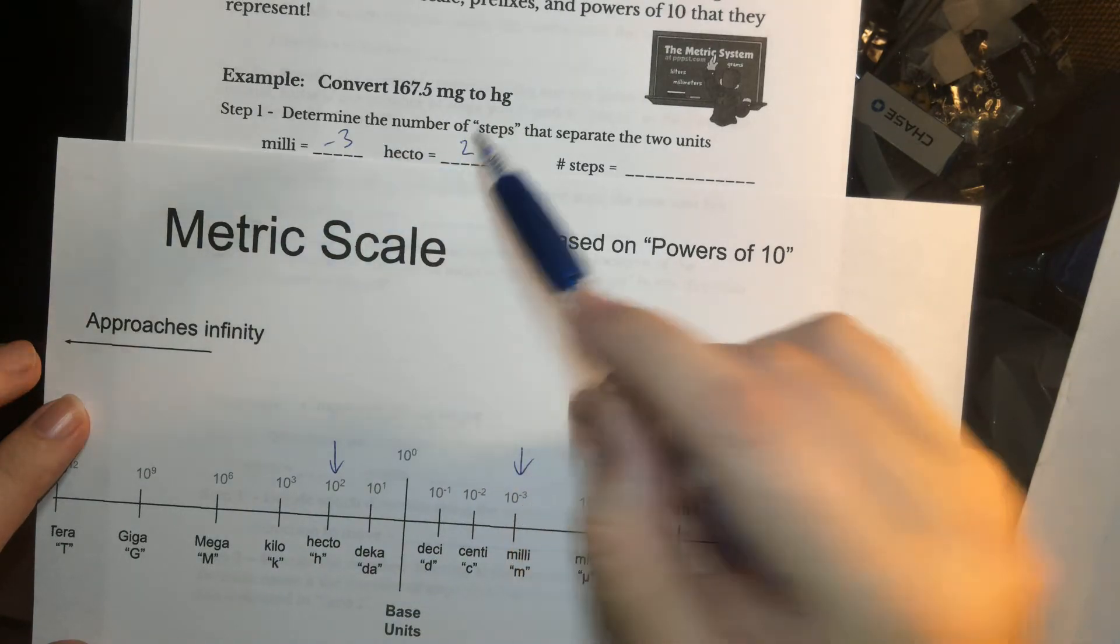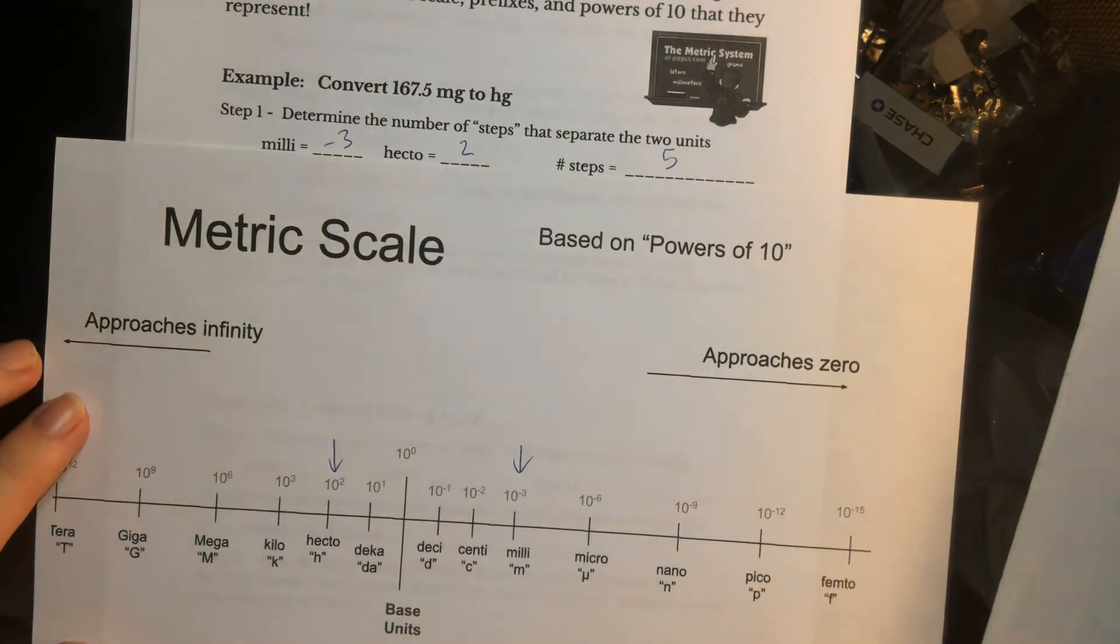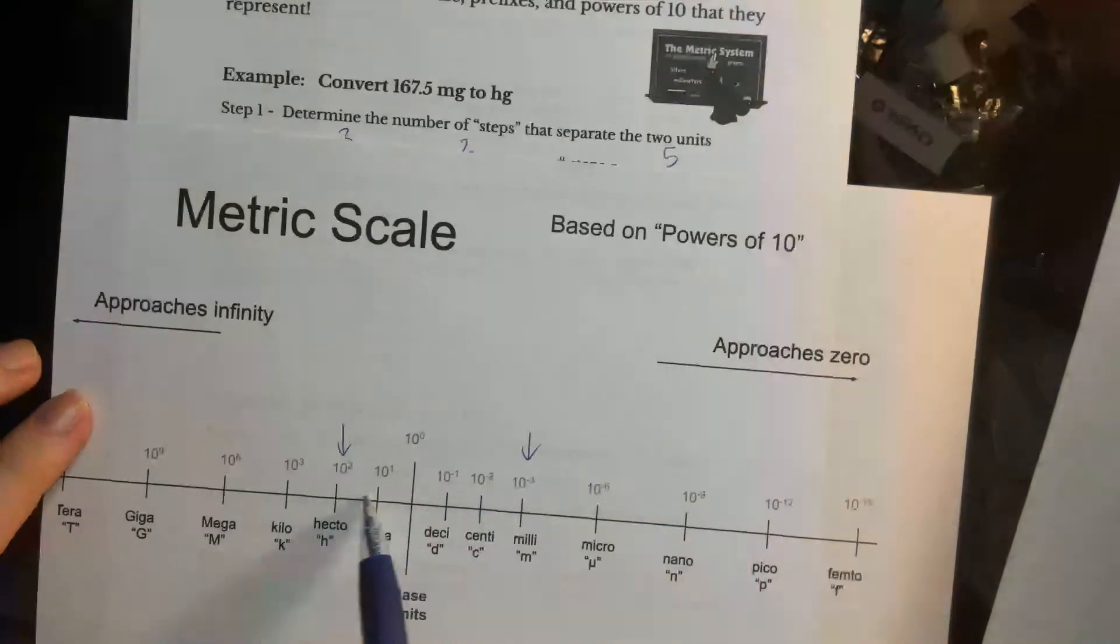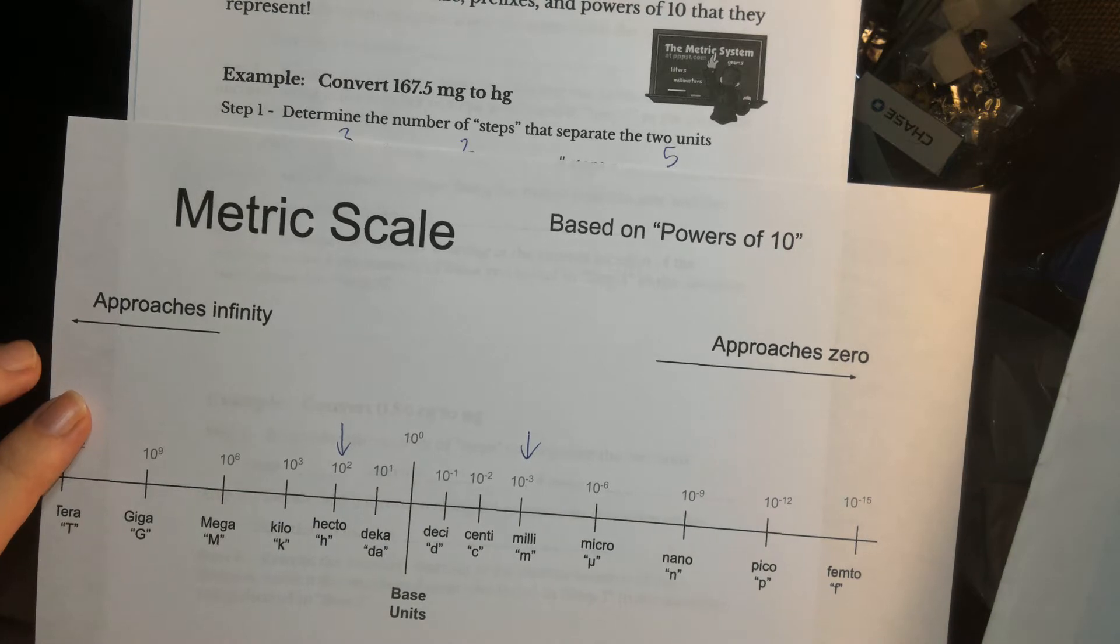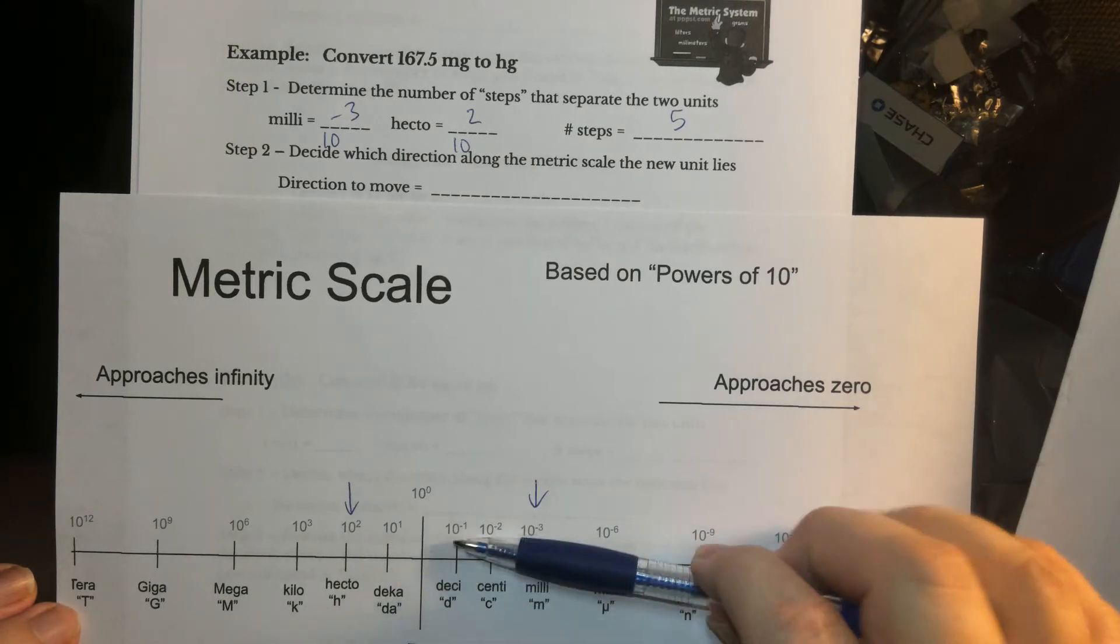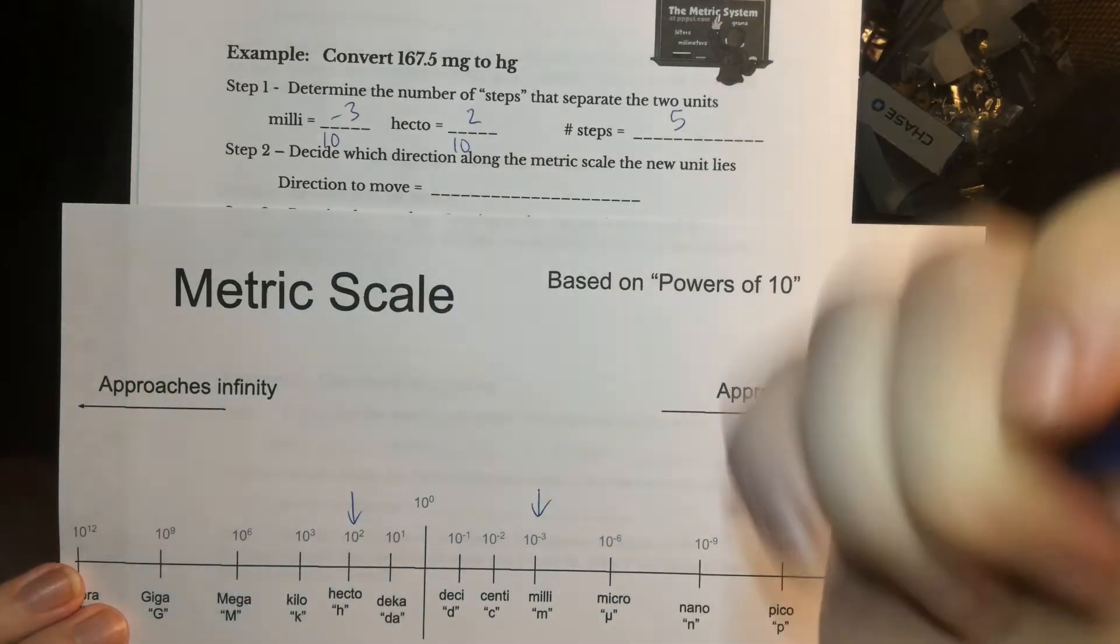2 minus a negative 3 is 5 steps, which I can confirm by looking at my metric scale. 1, 2, 3, 4, and 5. Now the next question is, what direction do I go? What I just showed you, I went from milli to hecto, and that's clearly going in the left direction.